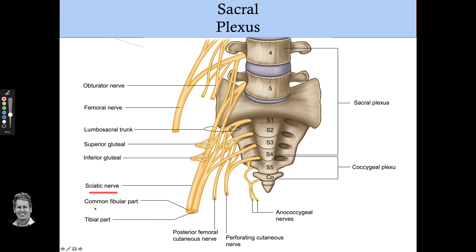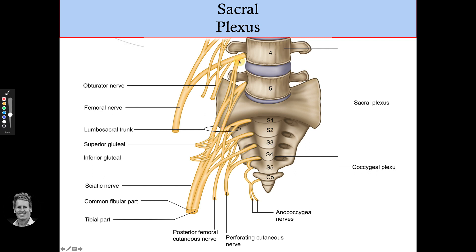The sciatic nerve is split into the common fibular (common peroneal) and the tibial. The common fibular part comes from L4, L5, S1, and S2, whereas the tibial part comes from L4, L5, S1, S2, and also S3 to form the tibial component.